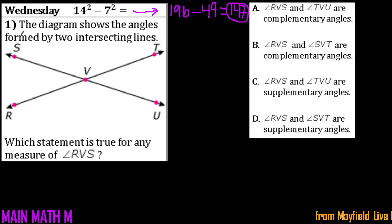All right, for the first one, it says the diagram shows the angles formed by two intersecting lines. So it has the vertex as V, and then it has two line segments that go through that point V. It says which statement is true for any measure of angle RVS. So let's go ahead and highlight what angle RVS is. So we know that it has to go through those points R, V, and S.